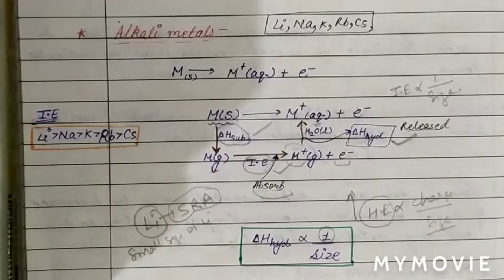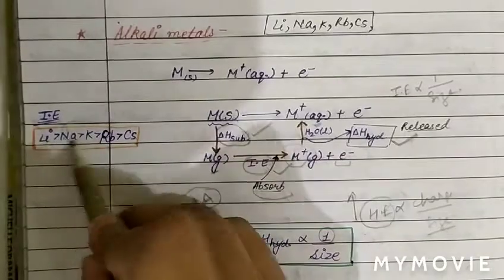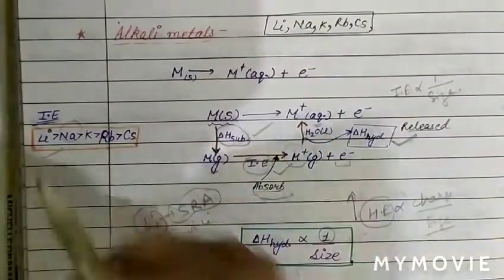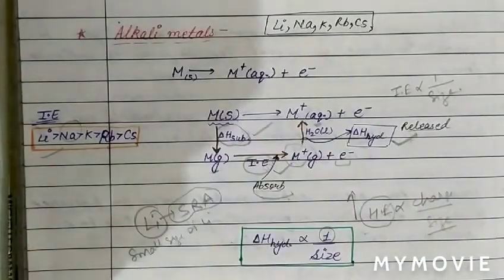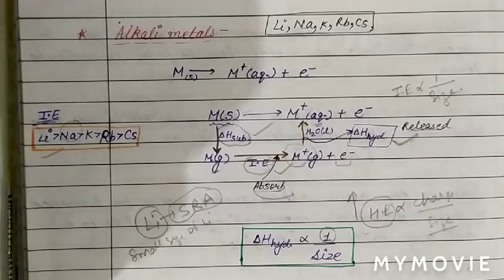Sodium is the least powerful reducing agent among alkali metals, while lithium is the strongest reducing agent. Reducing power decreases down the group.